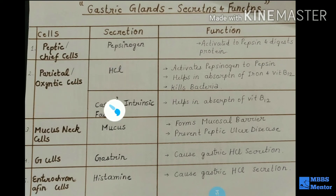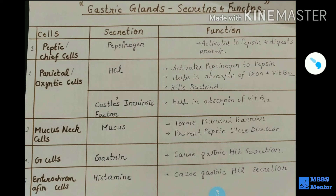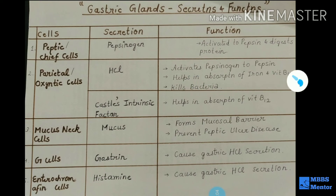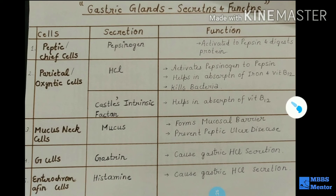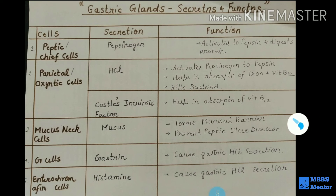Number two is the parietal or oxyntic cells. They secrete two things: HCL and Castle's intrinsic factor. HCL activates pepsinogen to pepsin, converting the inactive enzyme into its active form, and helps in the absorption of iron and vitamin B12. Castle's intrinsic factor also helps in the absorption of vitamin B12. Number three, mucus neck cells secrete mucus.